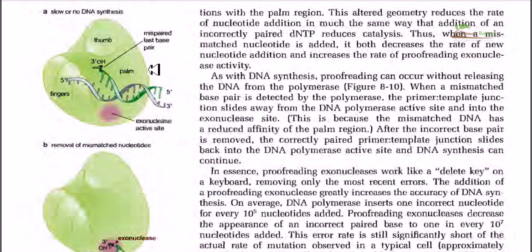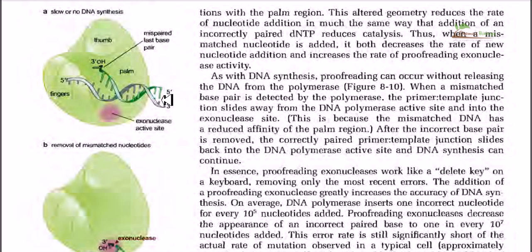For example, suppose we have a strand ATTC — on the opposite strand we must put TAAG. Suppose in one of those positions, next to adenosine, where thymine must pair according to Watson-Crick base pairing, the DNA polymerase mistakenly puts guanosine instead of thymine. As a result of this mistake, the conformation of the DNA polymerase gets distorted. Each time an erroneous nucleotide is incorporated, the structure of DNA polymerase distorts such that its functionality and productivity slow down.